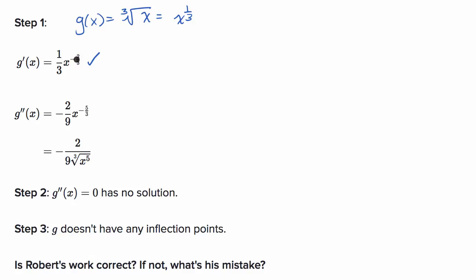For the second derivative, we take this, multiply 1/3 times 1/3, which would be negative 2/9ths, and then decrement negative 2/3rds, which would indeed be negative 5/3rds — so that looks right. Then Robert rewrites it: negative 2/9ths in the numerator, and x to the 5/3rds in the denominator, which is the same thing as the cube root of x to the 5th. Step one looks good.